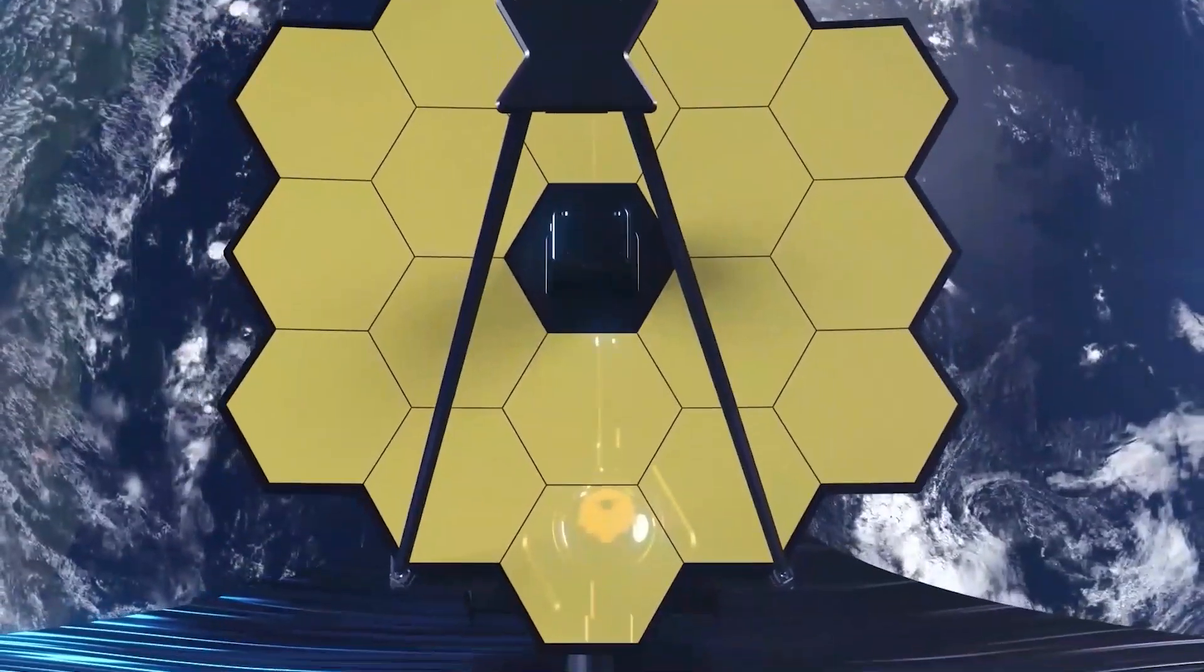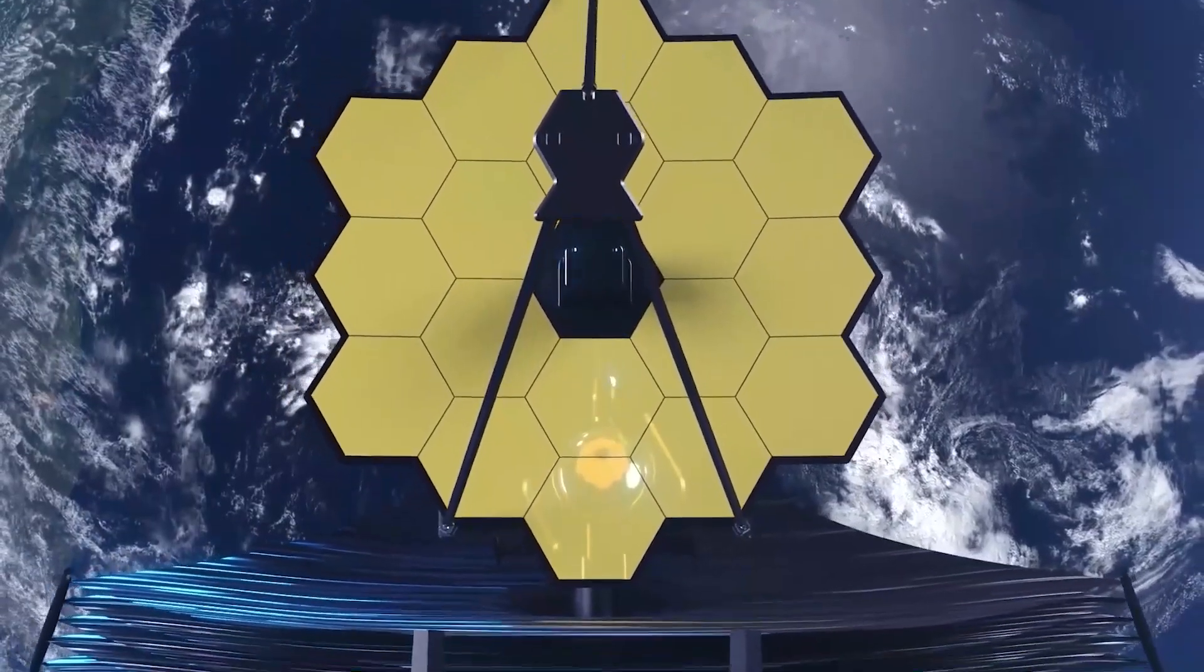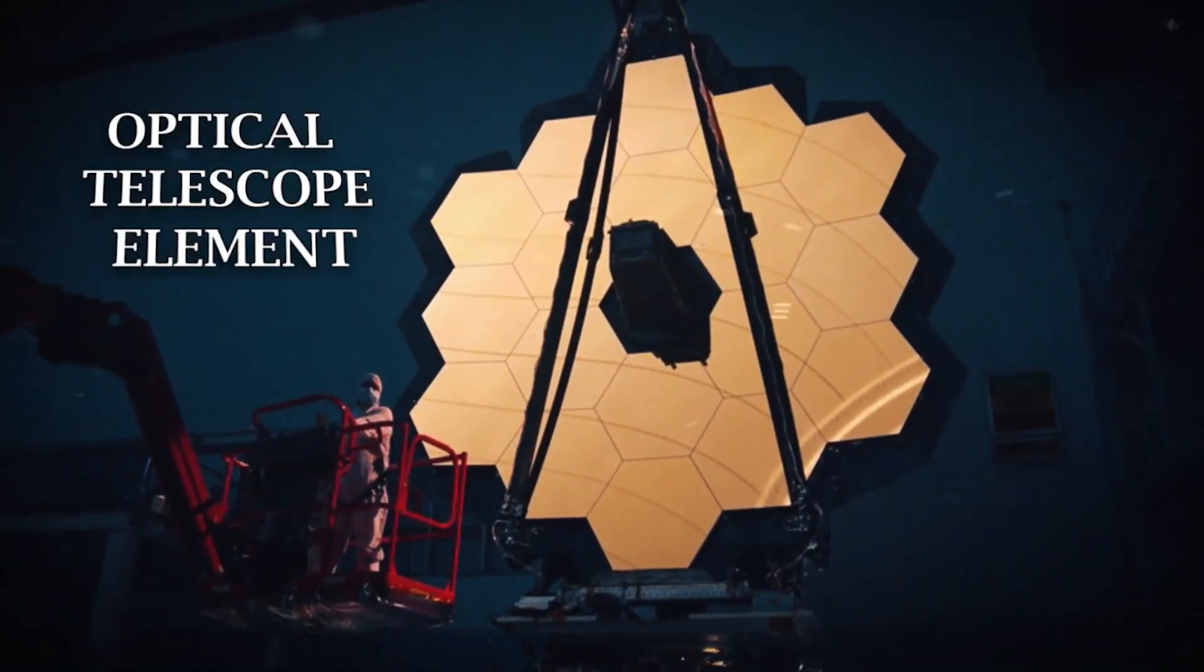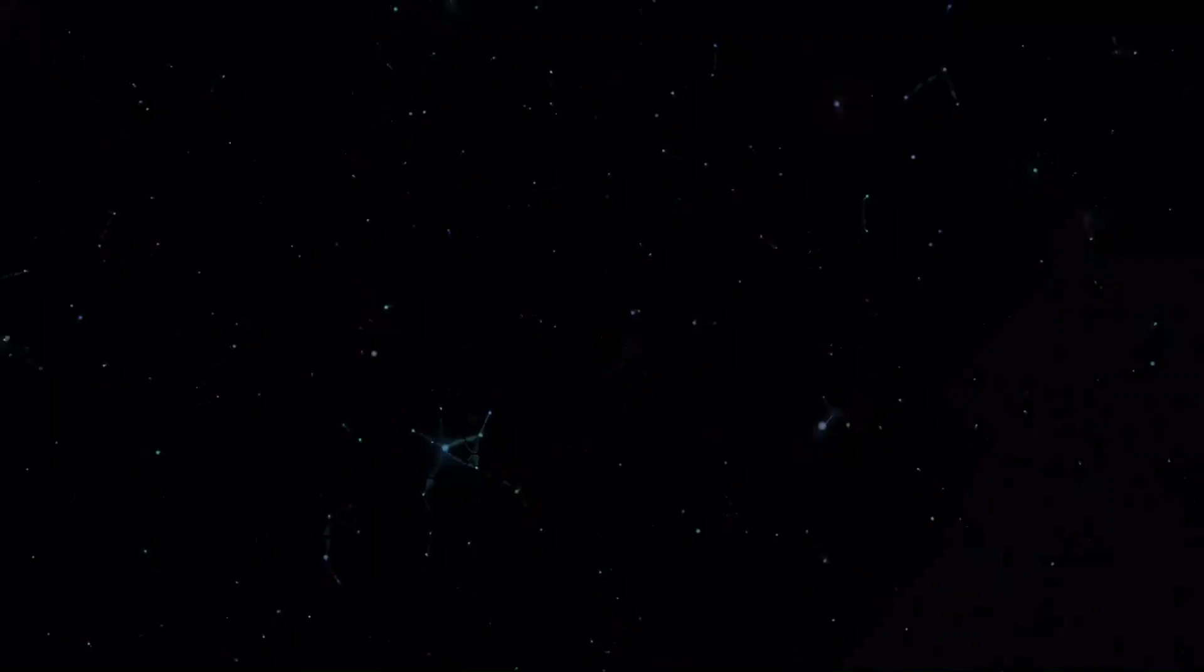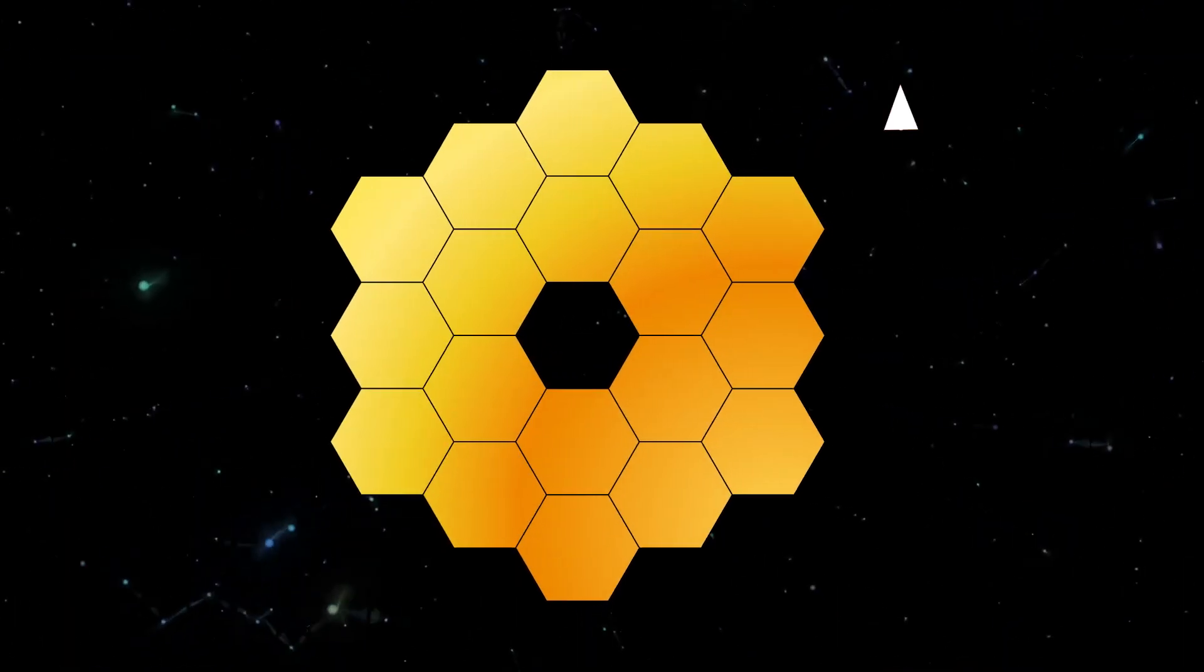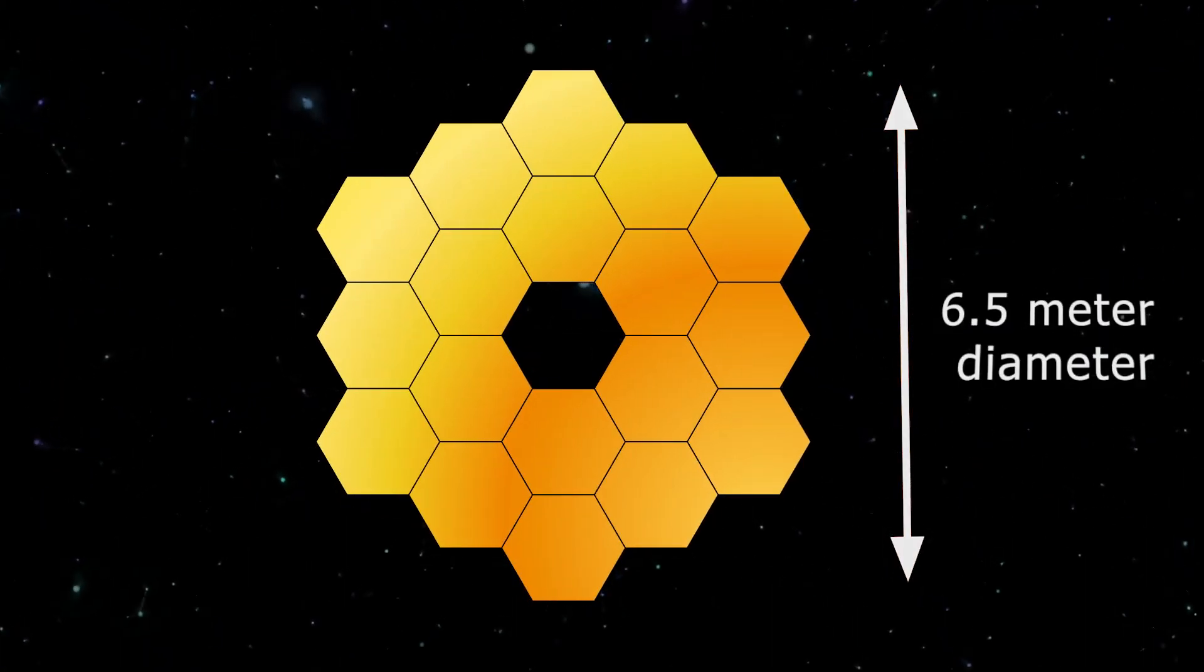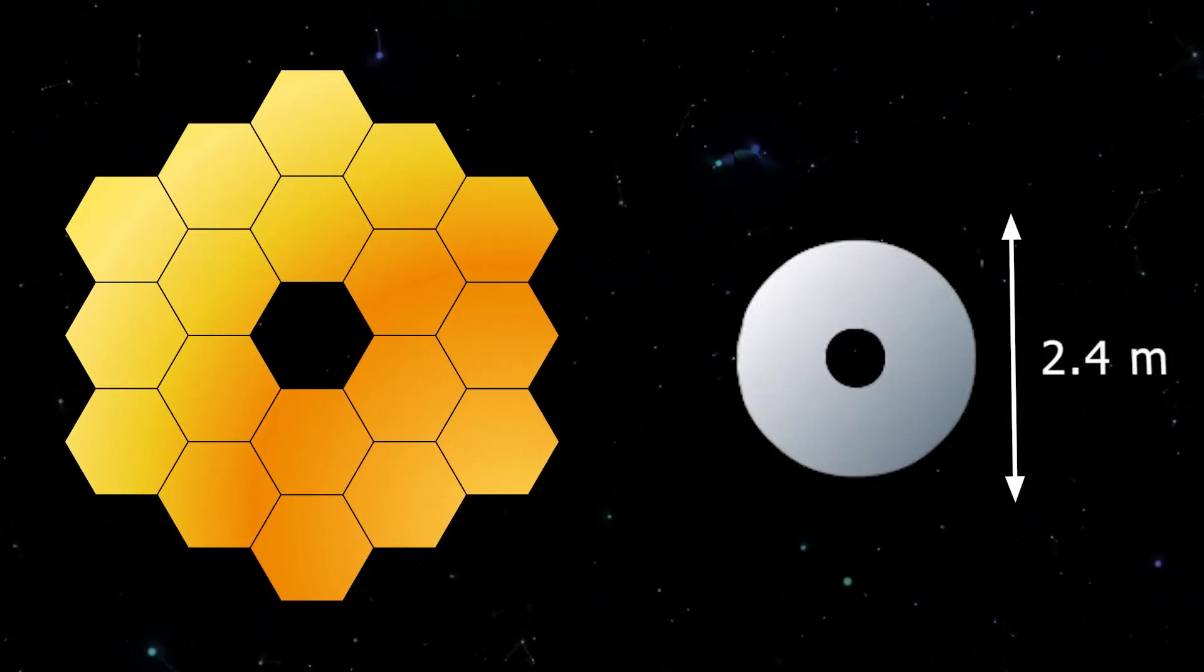Interestingly, the JWST has a primary mirror, which is referred to as an optical telescope element, consisting of 18 hexagonal mirror segments made of gold-plated beryllium, which combine to create a 6.5-meter diameter mirror, compared to Hubble's 2.4 meters.